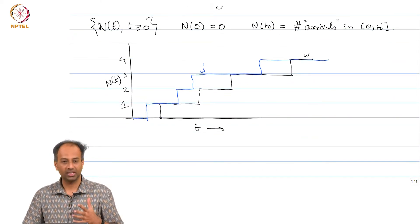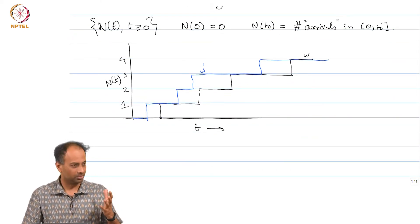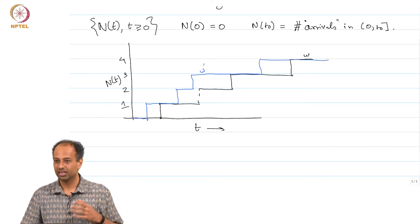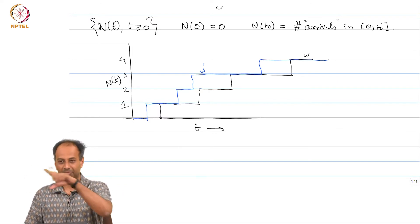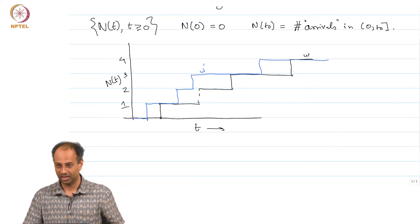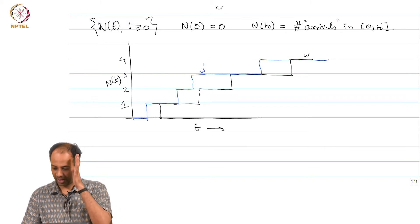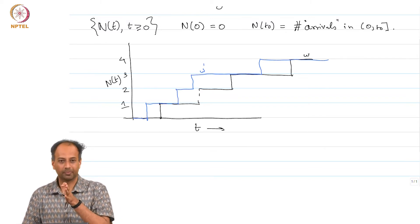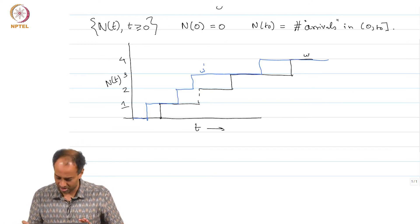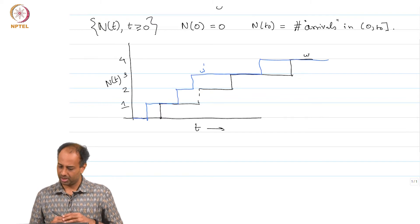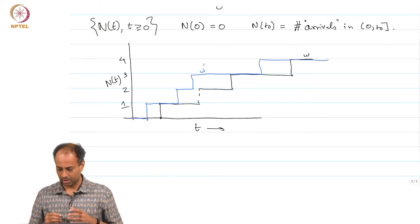N(t) describes a sequence of random variables — for each continuous time t. For any particular ω, you get a step function N(t, ω), and for any particular time, N(t) is some random variable. This counting process can also be described equivalently in terms of the inter-arrival times of these buses, radioactive particles, or whatever it is you are talking about.